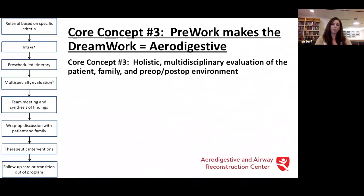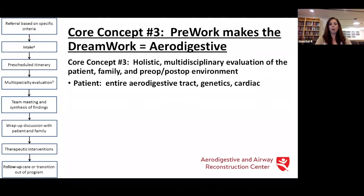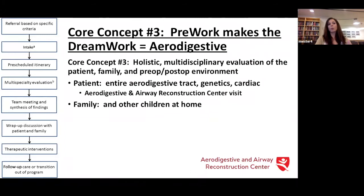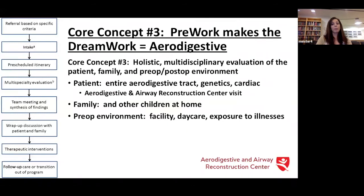Core concept number three is really about multidisciplinary evaluation of the patient, the family, and the environment. This extends to include not only the patient — their aerodigestive tract, genetics, and heart — but also the family. Are there other children at home? Should we wait until the viral season is over? In the Northeast, siblings are bringing home viruses that may influence your management. We really want to make sure that if we're taking a child for a triple endoscopy, we're getting reliable information. We'll often cancel the procedure if the child is sick and we feel we would not get robust data.